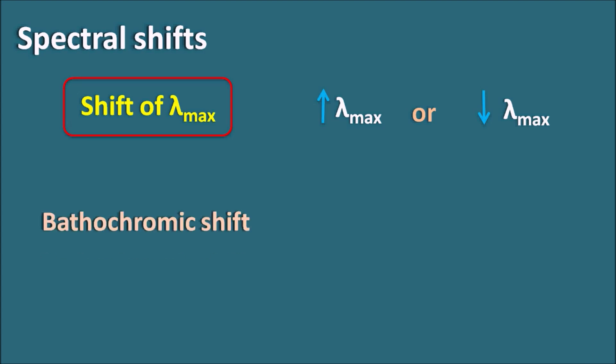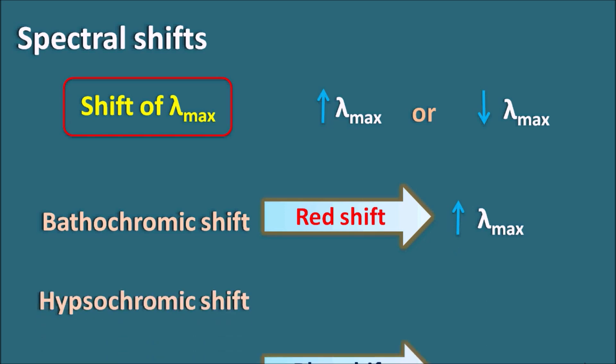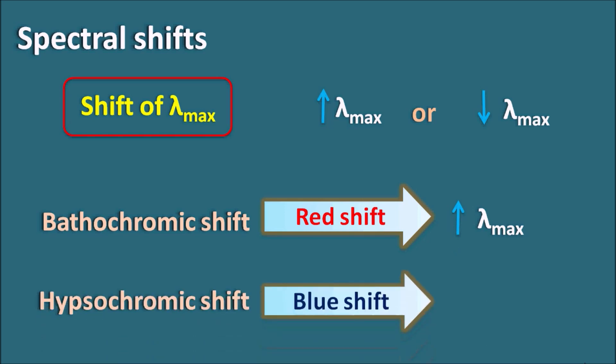Bathochromic shift, which is also called red shift, indicates an increase in lambda max. Similarly, hypsochromic shift is the blue shift, where lambda max is going to be decreased.